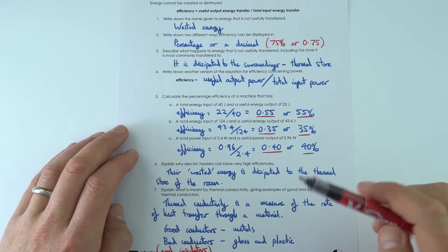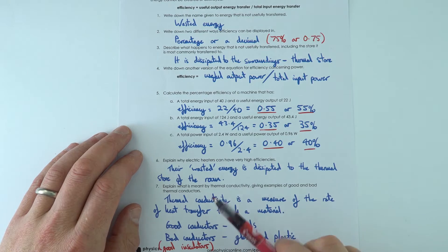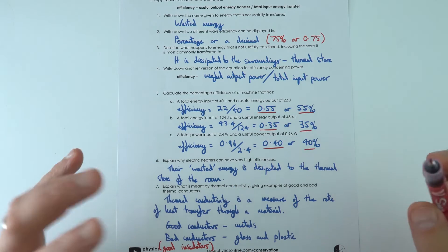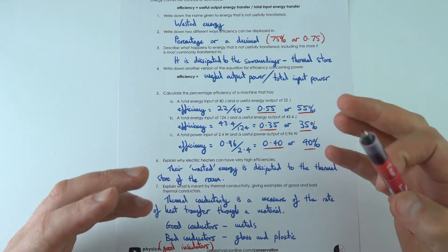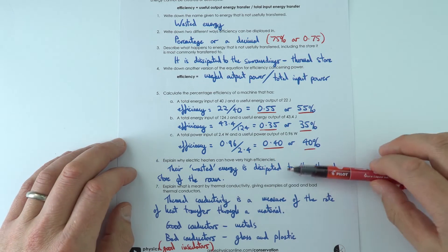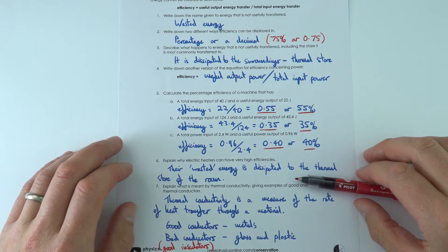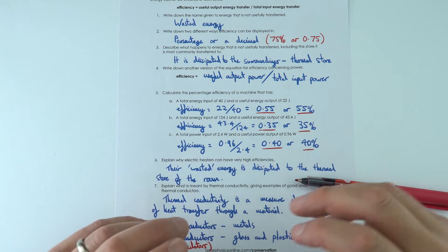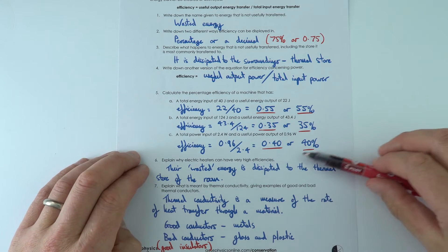Then we looked a little bit at electric heaters. Now these are actually really efficient because normally the wasted energy increases the thermal store of the surroundings, which is exactly what we want to do with an electric heater. So maybe even if the wires are getting hot, if there's some wasted sound, that's all going to be adding to the overall efficiency of that device.